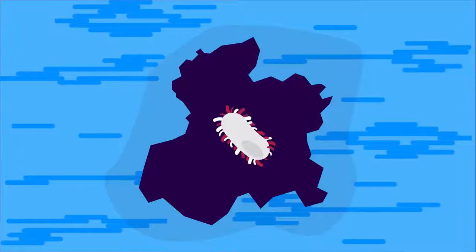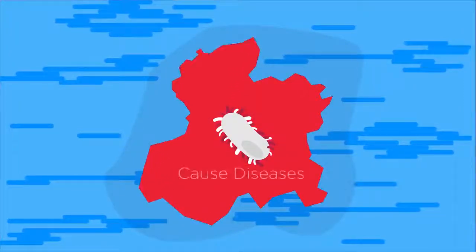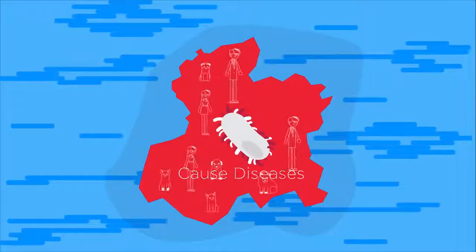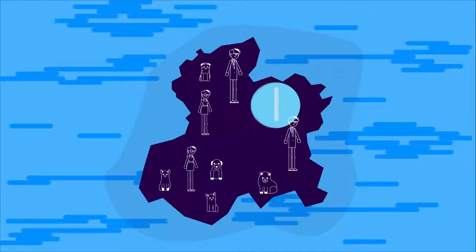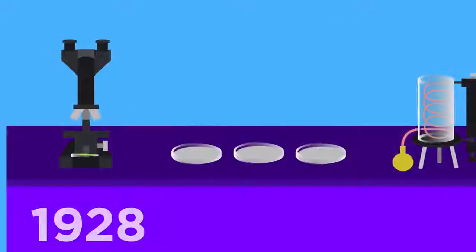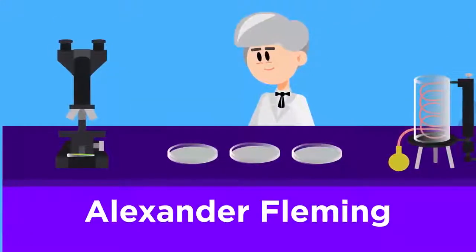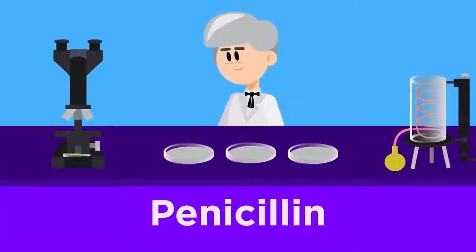Bacteria are single-celled organisms which can be pathogenic. That means that they can cause disease in humans and animals, and antibiotics can be used to treat these diseases. In 1928, Alexander Fleming discovered the very first antibiotic, penicillin.